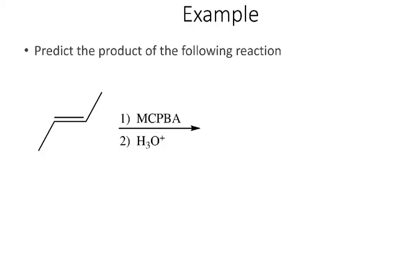Two examples based on the previous slide. I want to predict the product of the following reaction. MCPBA is a peroxyacid, so it's like RCO3H. This is going to give me anti-dihydroxylation, so I'm going to get one OH on the wedge, one OH on the dash. We want to think about the stereochemistry and whether or not I'm going to get an enantiomer in this case.